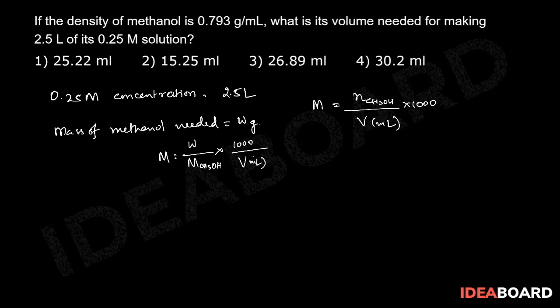Molar mass of methanol is 32, so it's 32 times 2.5 liters—we could directly substitute 2500 divided by 1000.